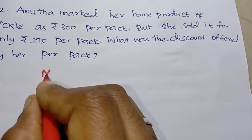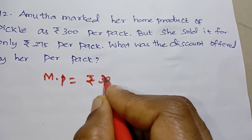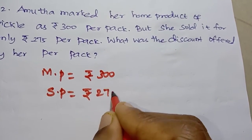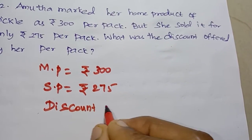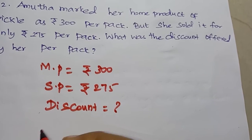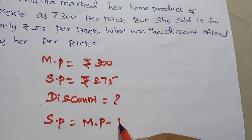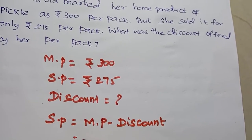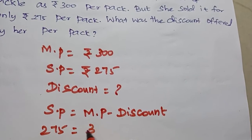Discount — the formula is SP = MP minus discount. Selling price is Rs. 275. Market price is Rs. 300. So discount = MP minus SP.